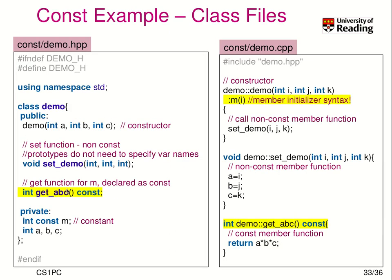You might wonder why it's necessary to have the const keyword in the declaration as well. At compile time when we build the implementation, the compiler ensures we don't modify any member variable. But when building user code that calls our function, the compiler doesn't necessarily know that the function doesn't modify state. Therefore const must be part of the declaration too — with both the declaration and the implementation, checks can be performed on both sides.